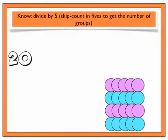OK, let's take a quick look at what happens when we divide by 5. Here are 20 counters. I would like to give each of my friends 5 counters, so can you work out how many of my friends will get counters? Let's take a look at our model.